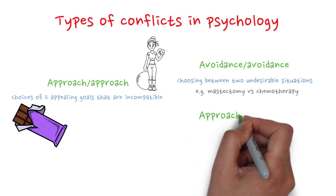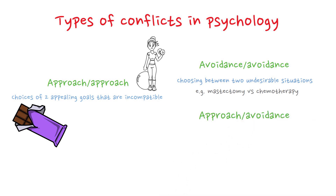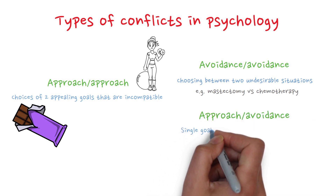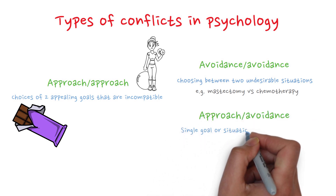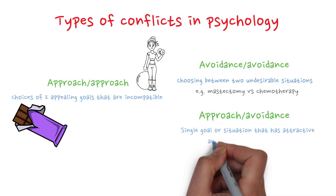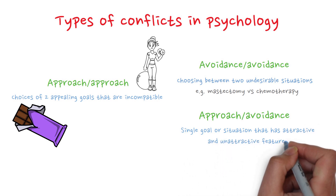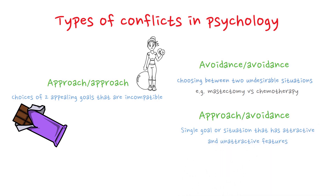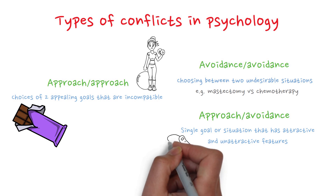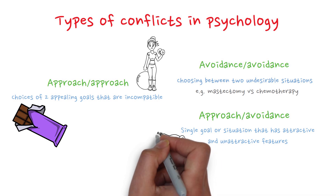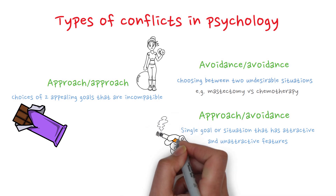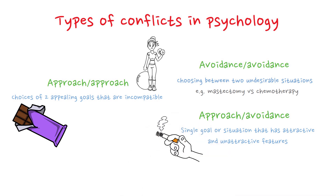Finally we have approach-avoidance — a single goal or situation that has both attractive and unattractive features. For example, let's consider smokers who want to quit smoking. They could be torn between wanting to improve their health and wanting to avoid the weight gain that might occur.